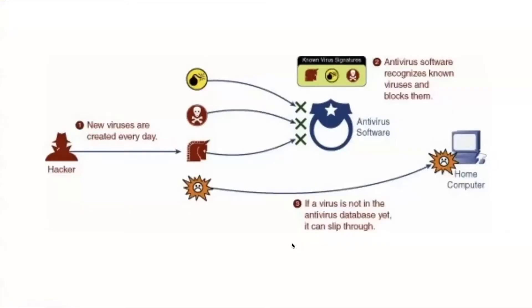Here is a small visual representation of how antivirus software actually works. The first step is that a new virus is created — many are created each day — and this is the hacker that would be creating it. Then you can see that this is the antivirus software, and all of the bad things trying to get into your computer are being stopped.